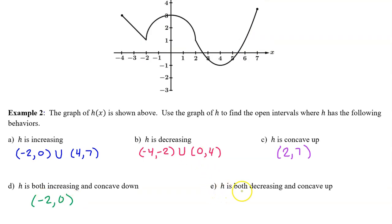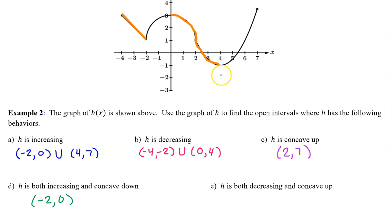Part e: where is h both decreasing and concave up? h is decreasing on two intervals, but the part that is also concave up is just one portion — h is both decreasing and concave up on the open interval from 2 to 4.